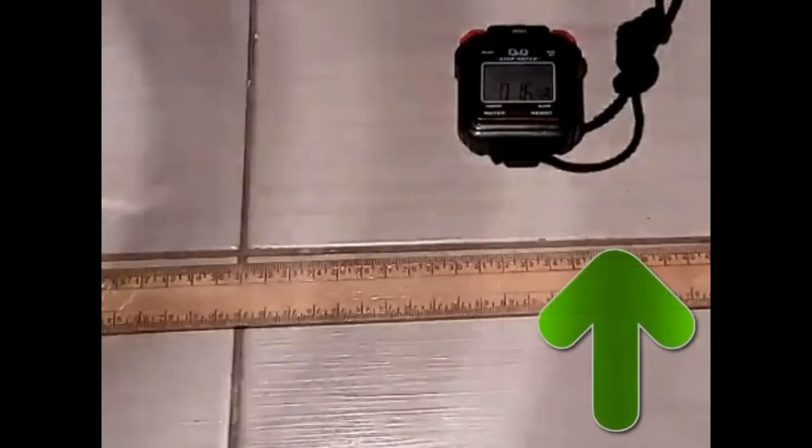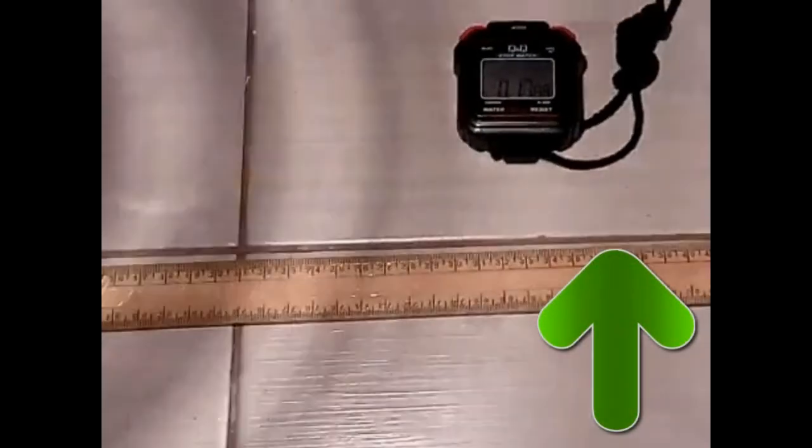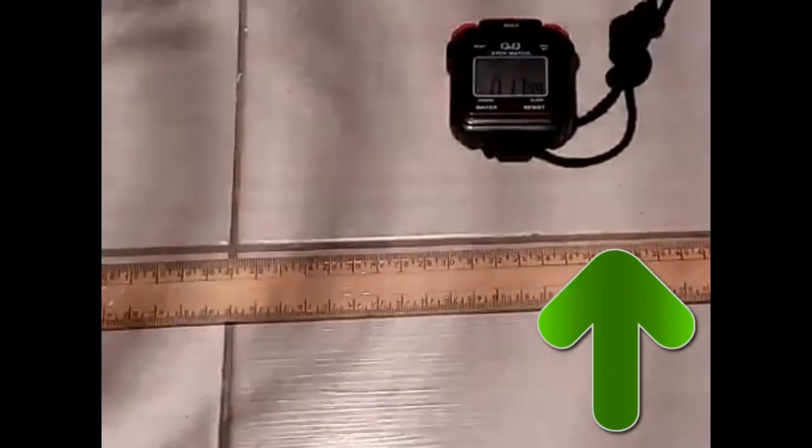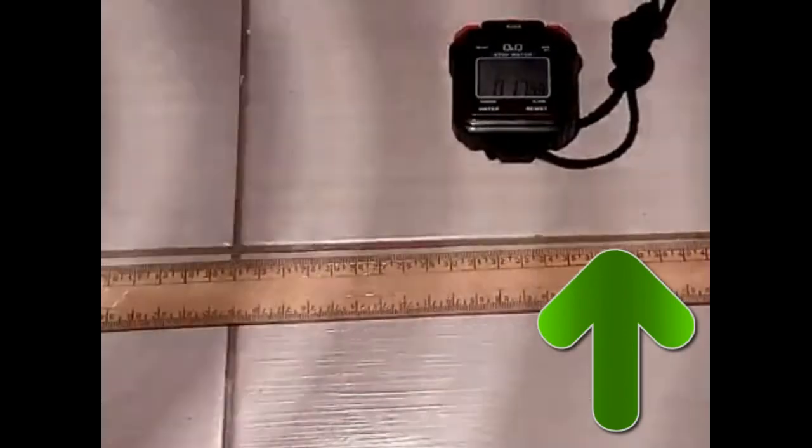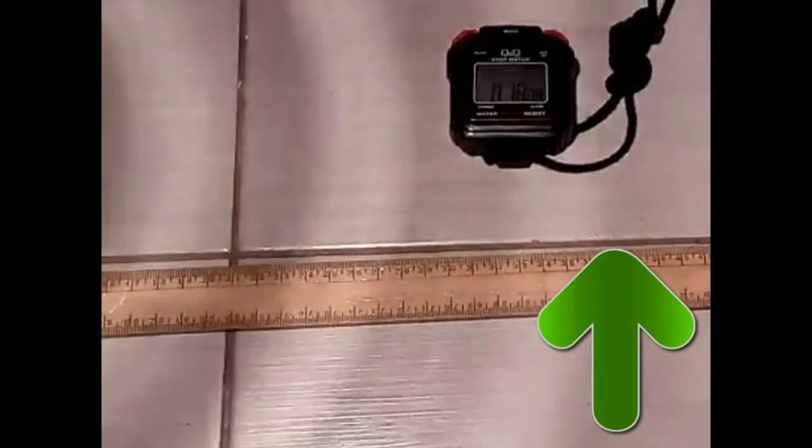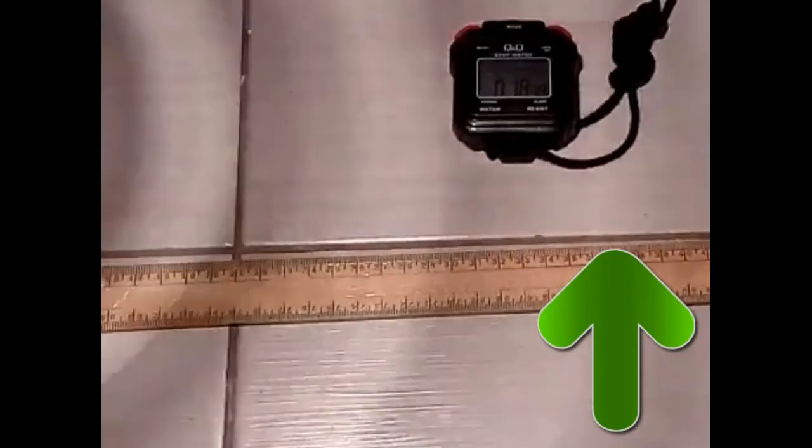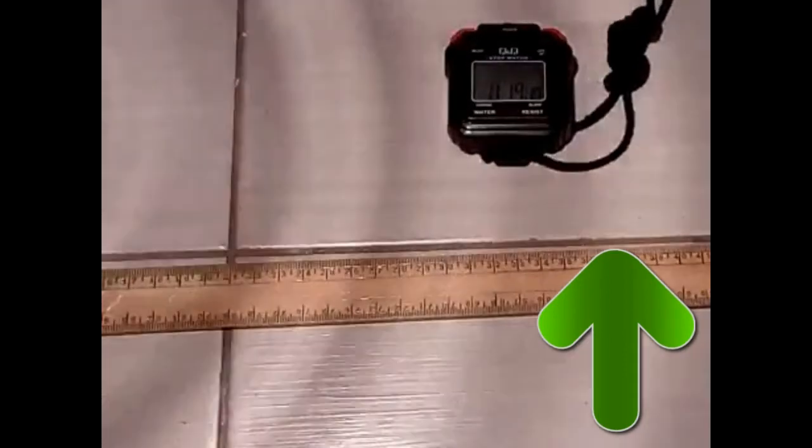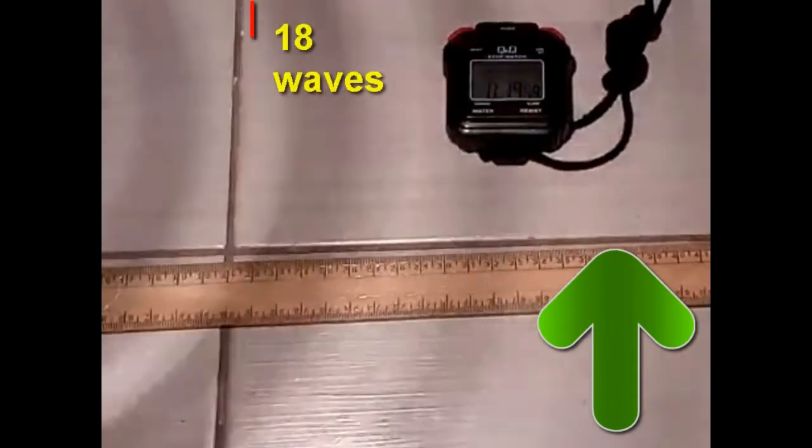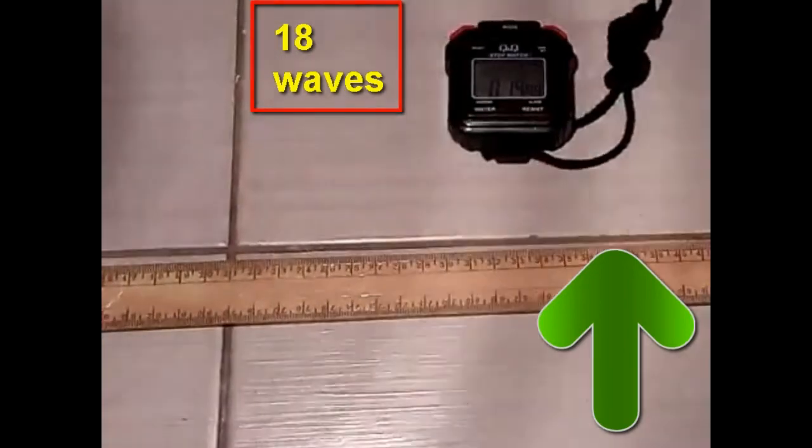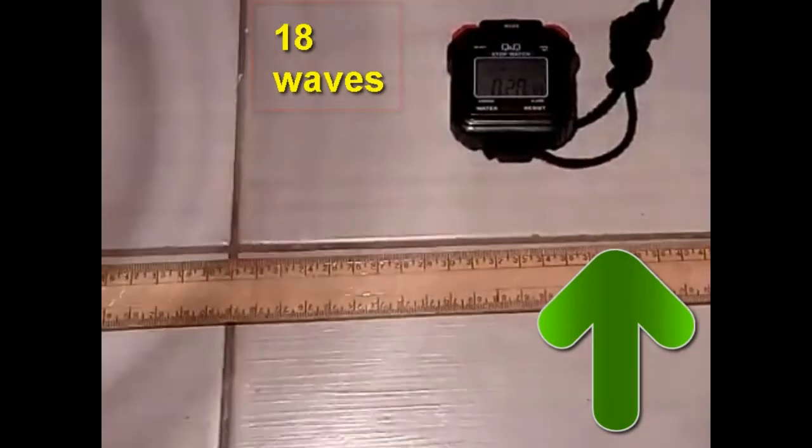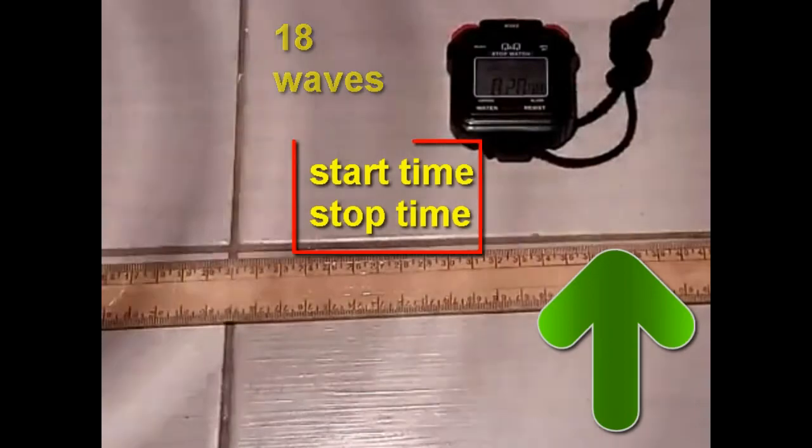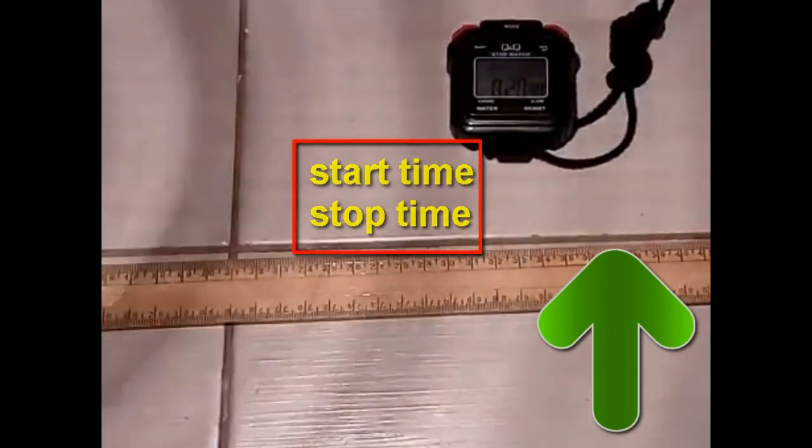Right here we have a Ripple Tank and in the background you can see the waves which are circular and they are passing at point where you can see the green arrow. Now we are able to count how many number of waves that have been formed that are passing at that particular point and there are 18 of them. And we have the starting time at the stopwatch and also the stopping time.